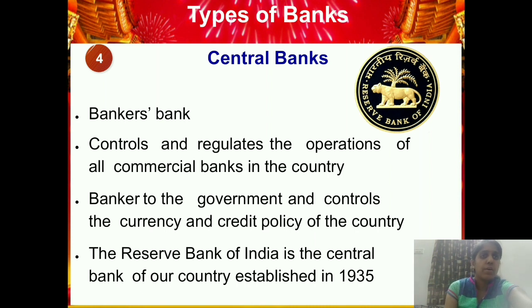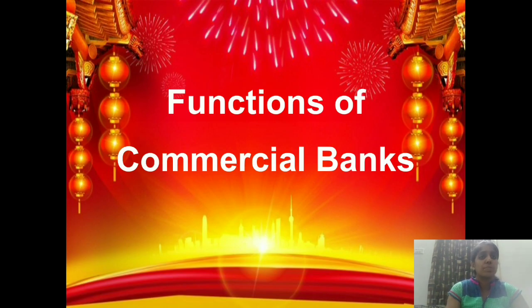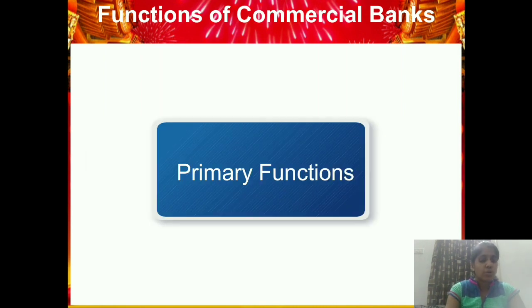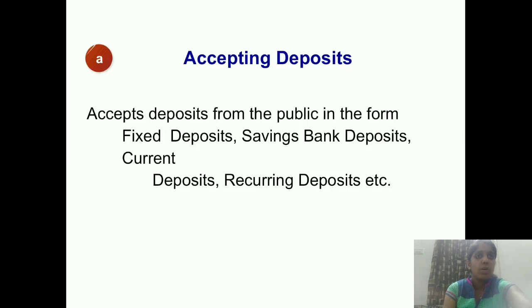Now we move to the functions of commercial banks. There are basically two functions: primary functions and secondary functions. Primary means the basic functions — accepting and lending deposits. Secondary means the many other facilities like locker facilities and other services. The first primary function is accepting deposits — the main and most important function of a commercial bank is to accept deposits from the public.